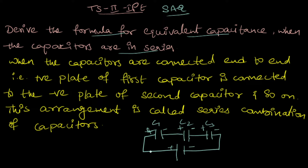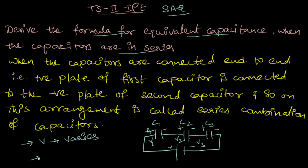As the battery is connected, the potential difference for C1 is V1, the potential difference for C2 is V2, and the potential difference for C3 is V3. Remember: for a series connection, the potential difference for every capacitor varies — it is different — and the charge on each plate is the same, which is Q.